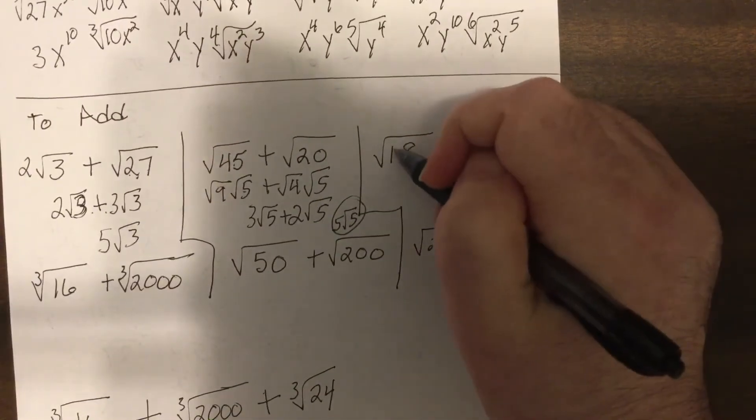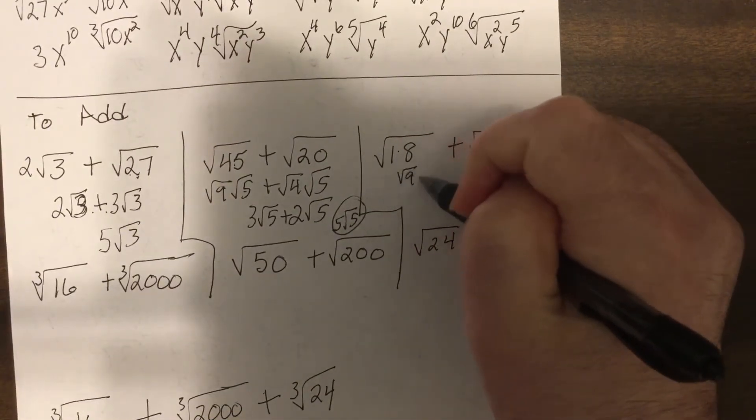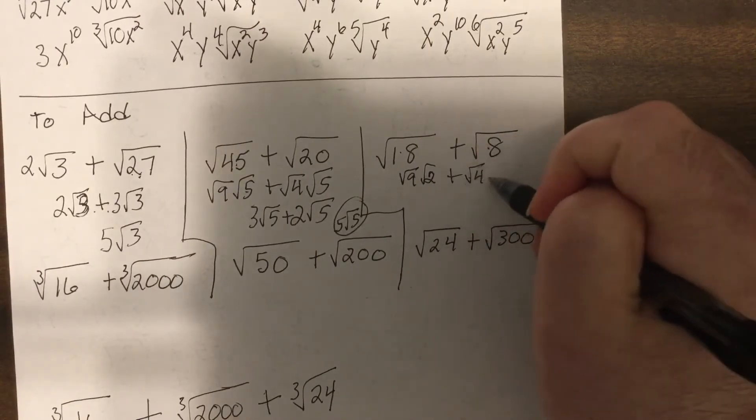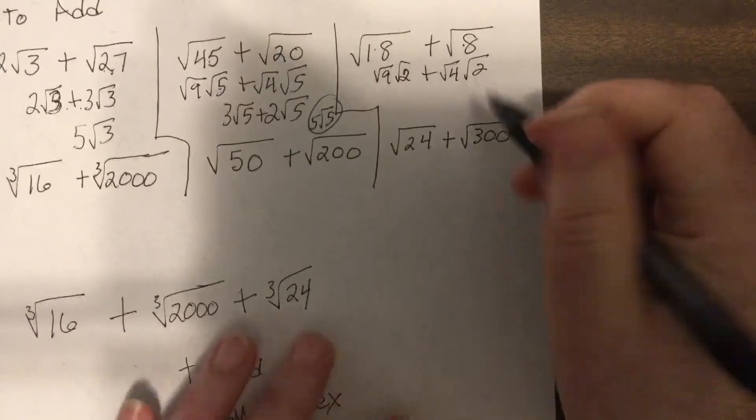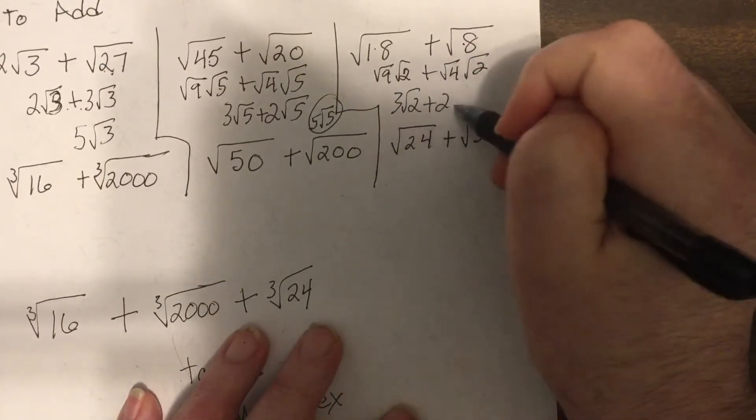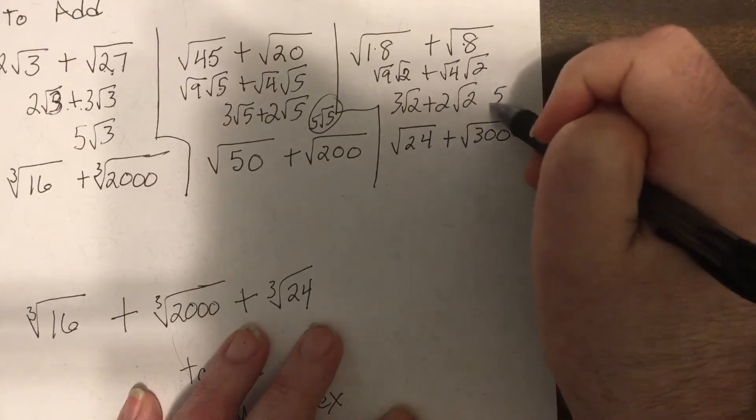So this one, nine is a perfect square. Eight is, four is a perfect square. So it would be three square root of two plus two square root of two, which is five square root of two.